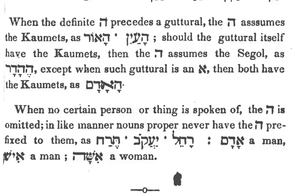Ha-Adam — or in modern Hebrew, Ha-Adam — and in the Ashkenazic pronunciation, Ho-Odom.